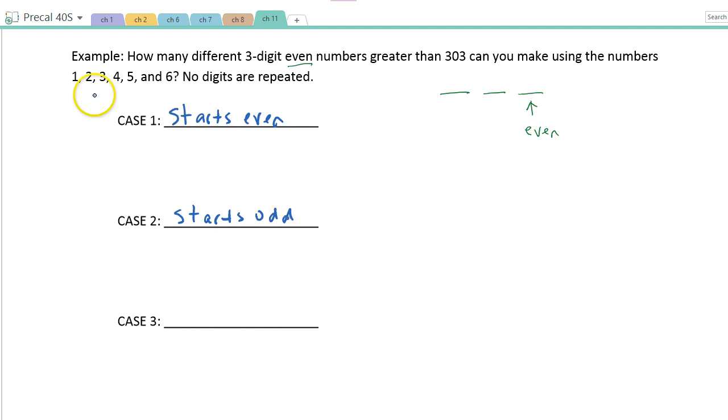So if it starts even, it would have to start with either a 4 or a 6. Why couldn't it start with a 2? If it started with a 2, then it would be less than 303. Okay, so let's think about our first one. If it starts even with a 4 or a 6, so we know that this has to be either a 4 or a 6, so there are two different ways to put that.